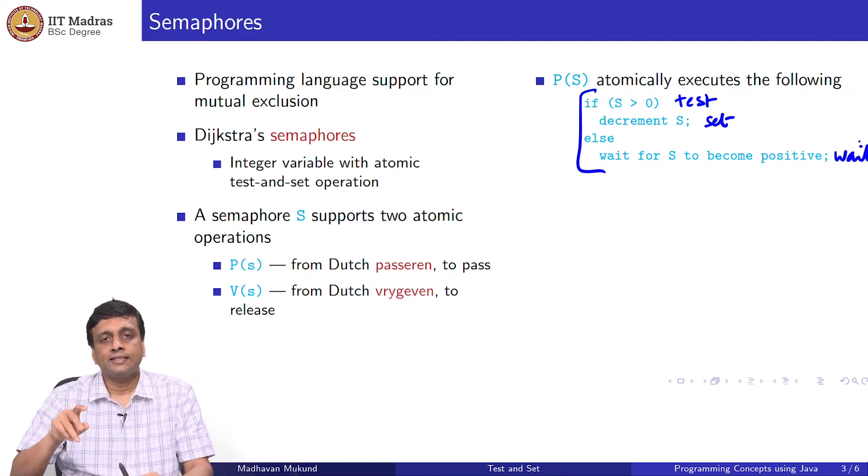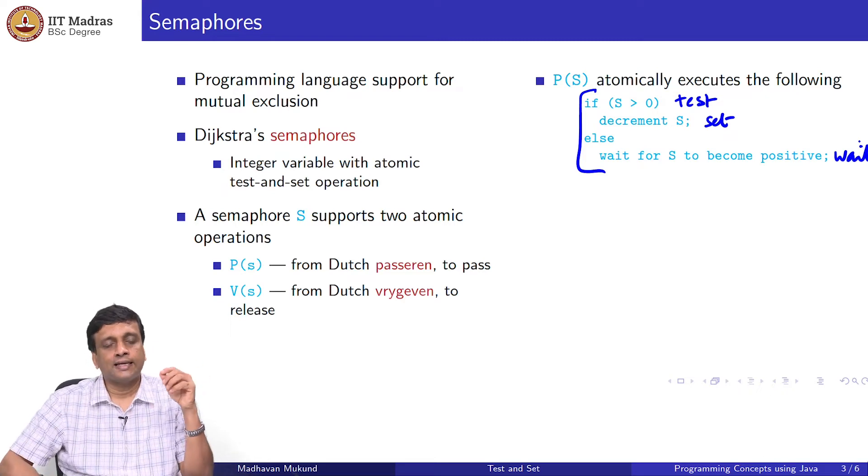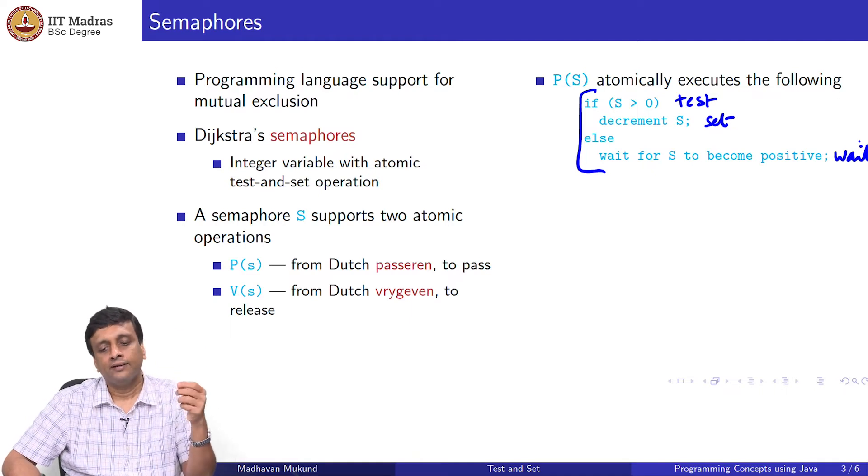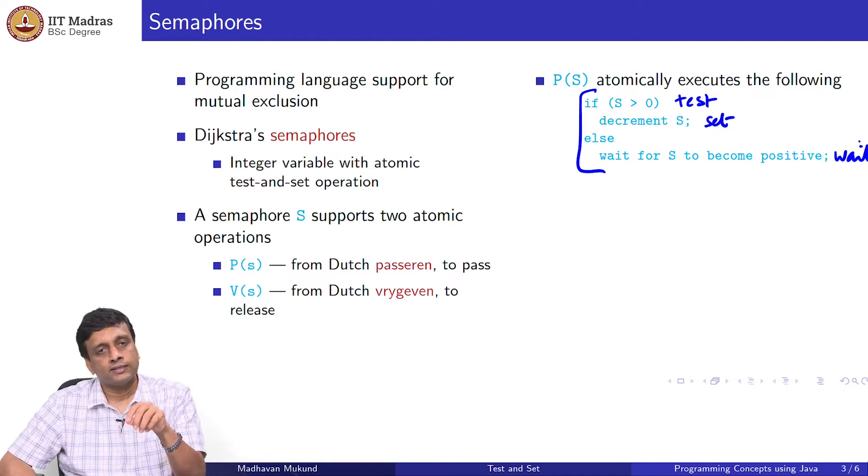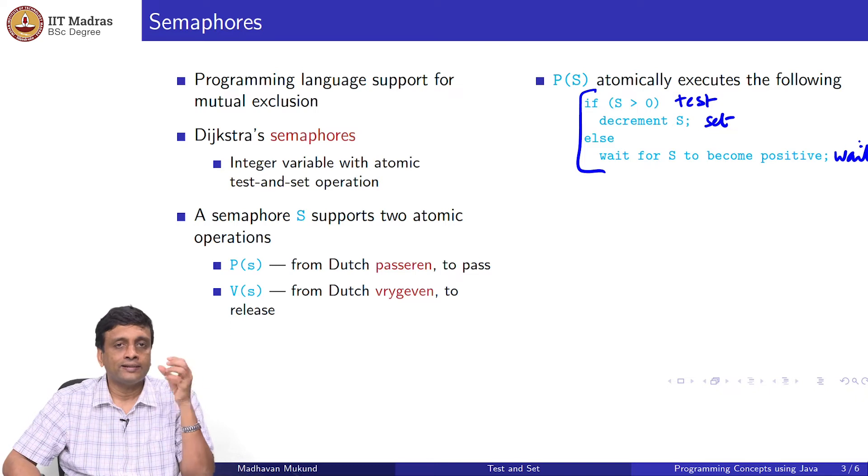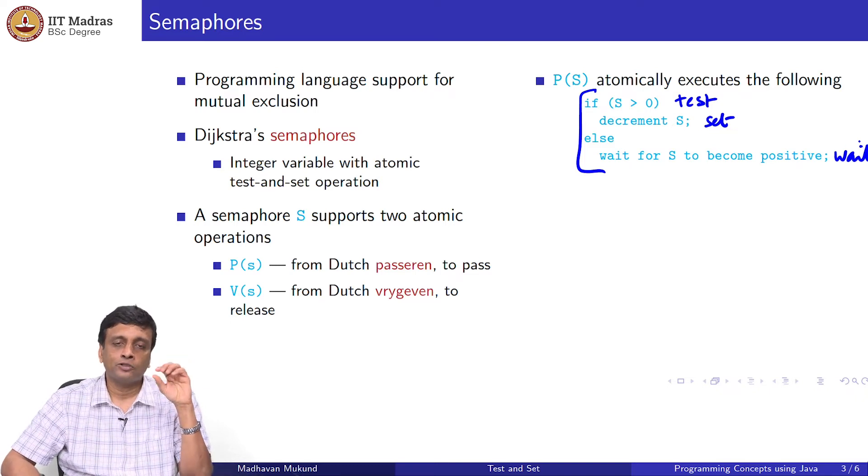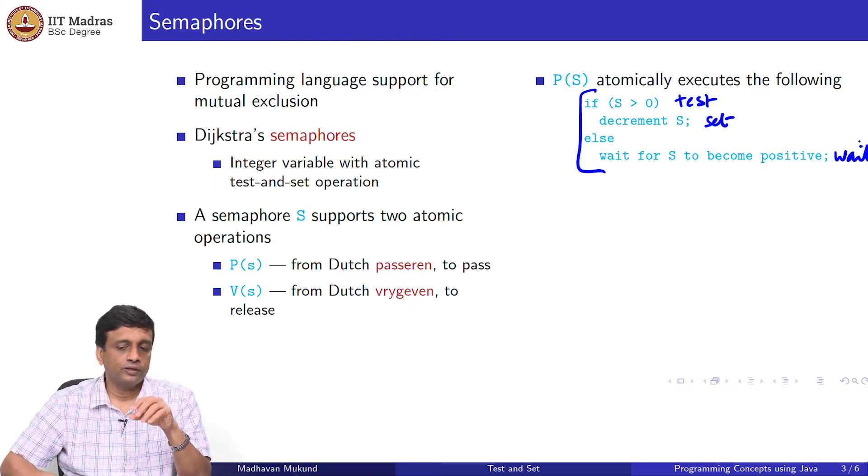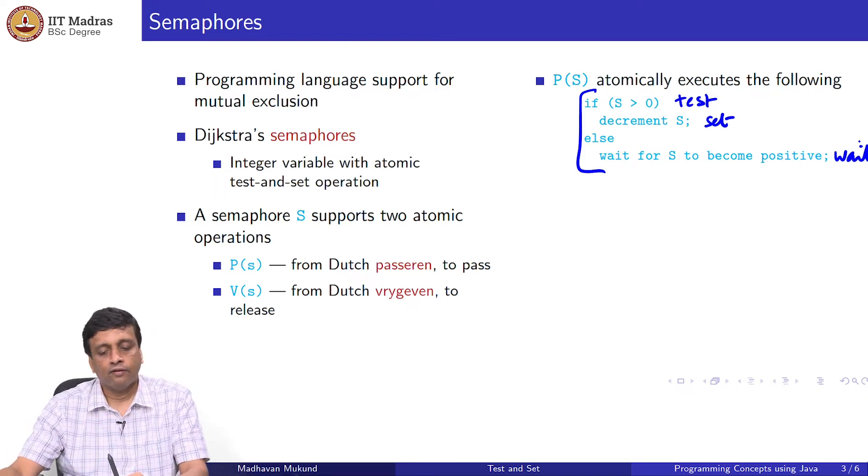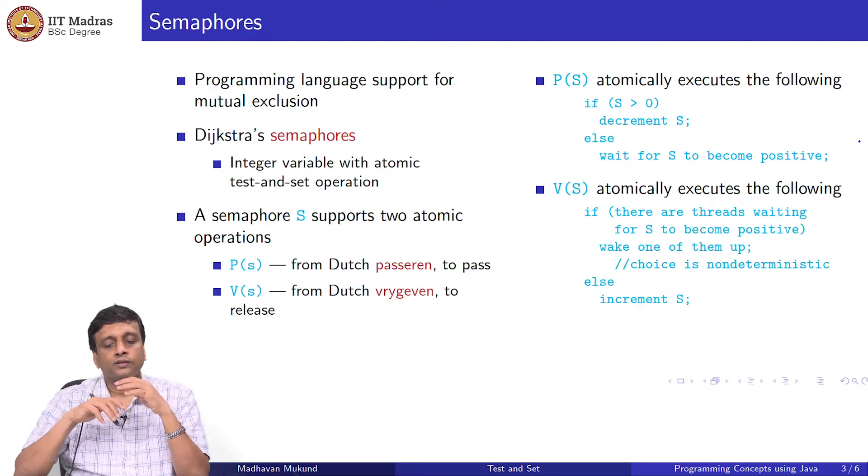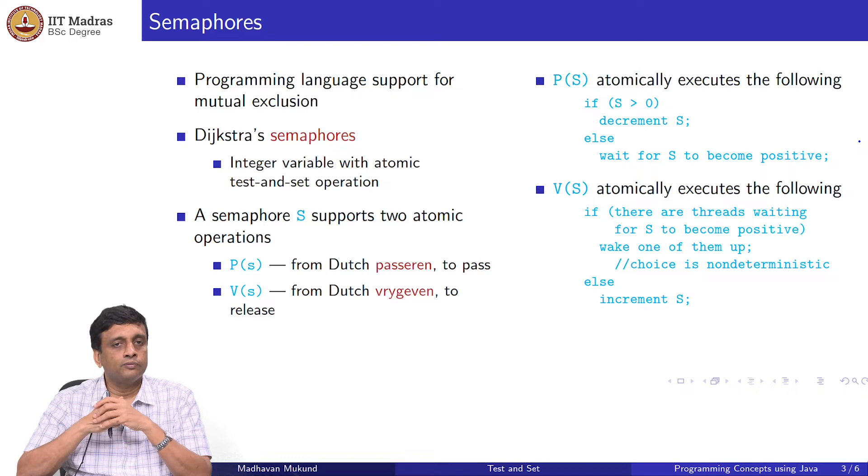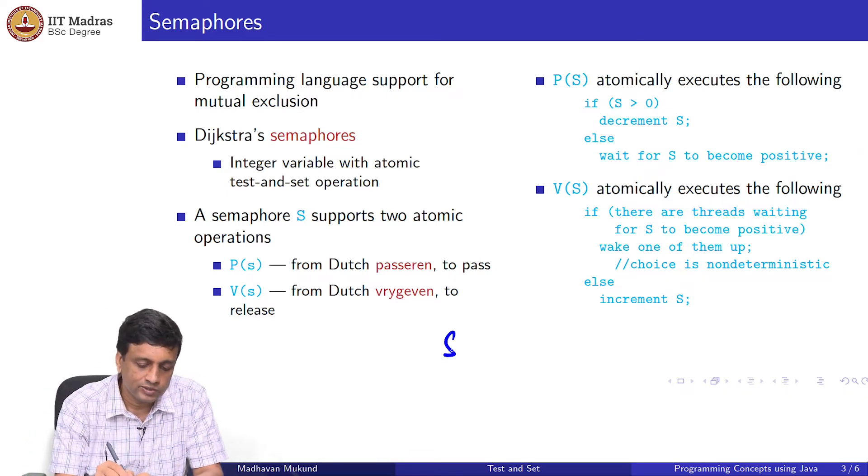The wait basically says that you are blocked. This is like that busy wait that we saw in Peterson's algorithm where while something happens, you are just checking it. Actually, the way that this works is that there is not a busy wait in that sense, because it is part of the programming language. You are guaranteed that you will be told when this thing becomes a correct value. That is what P of s does. V of s is symmetric.